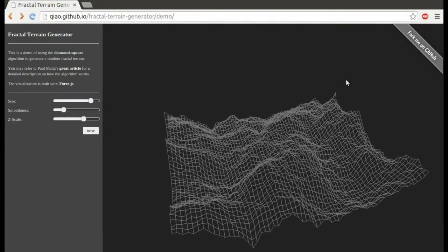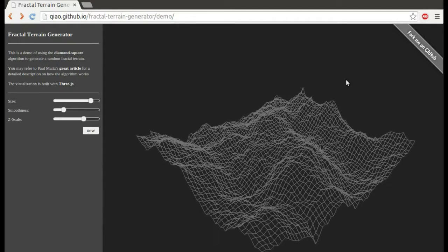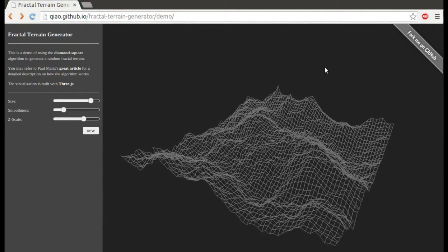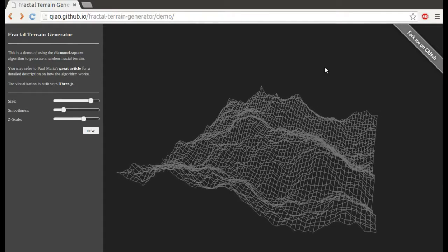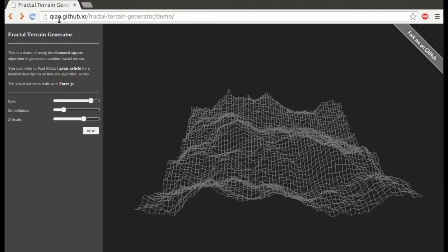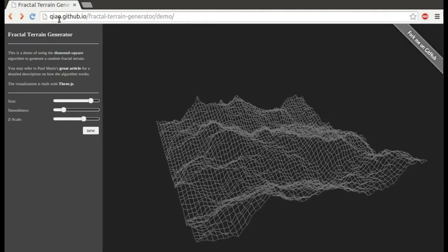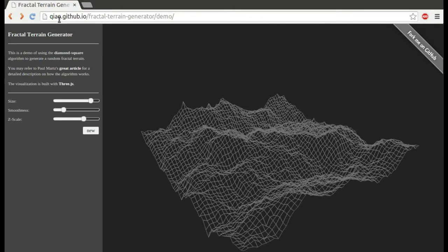So here's a program that carries out a process similar to that which I just described in order to make fractal terrains. So this is a little bit of JavaScript. The author is Xu Chao Xu, and the URL is here. And a reminder that there are links to this program and a lot of other programs in a separate section at the end of this unit.